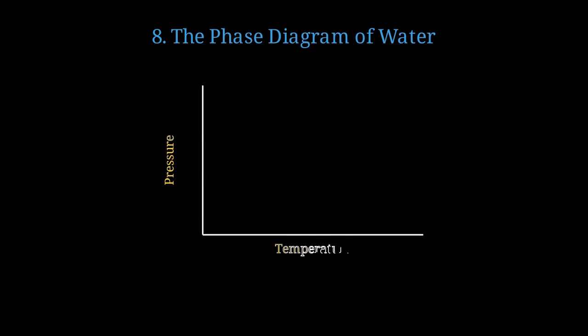Let's visualize how all these ice phases relate using water's phase diagram. Here's a simplified phase diagram of water. Normal ice exists at low pressure and low temperature. As we increase both, we reach superionic ice and ICE 21 regions.